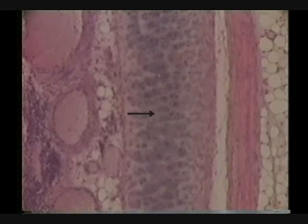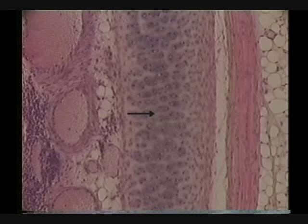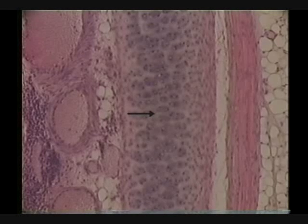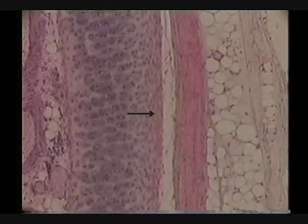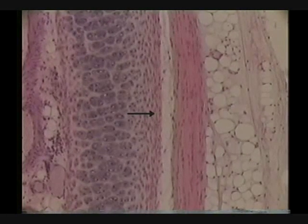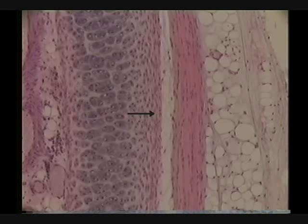Identify the tissue indicated by the pointer. The tissue is hyaline cartilage. Identify the layer indicated by the pointer. The layer is perichondrium.